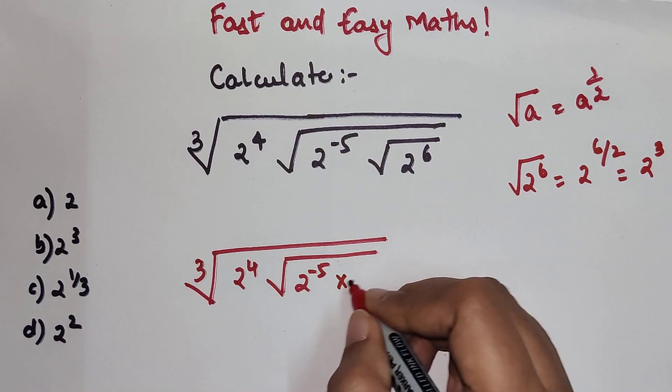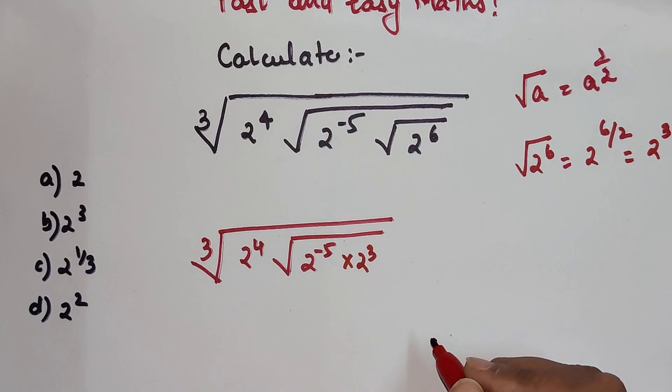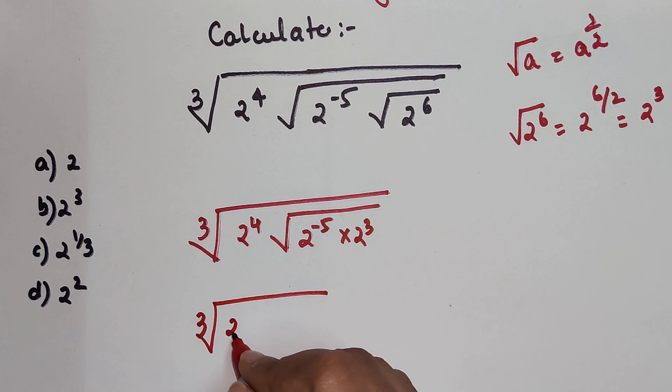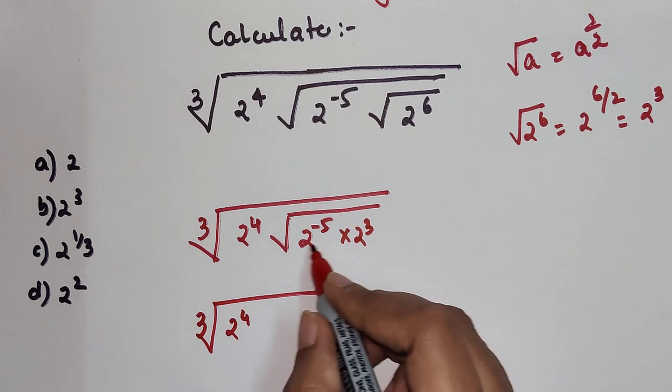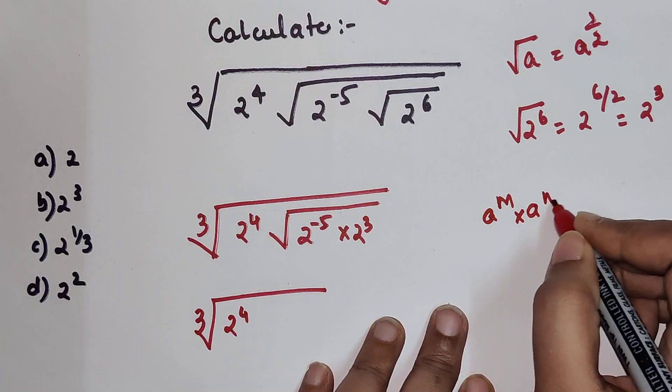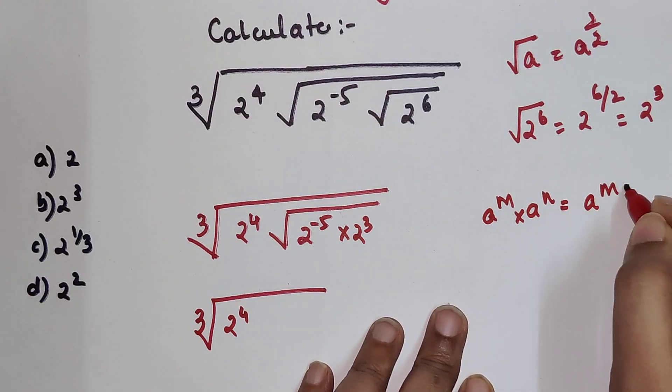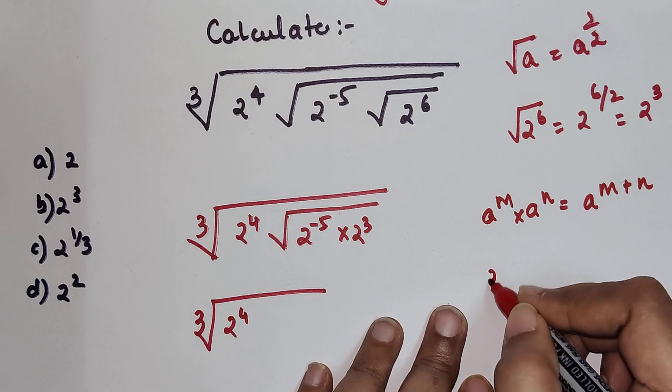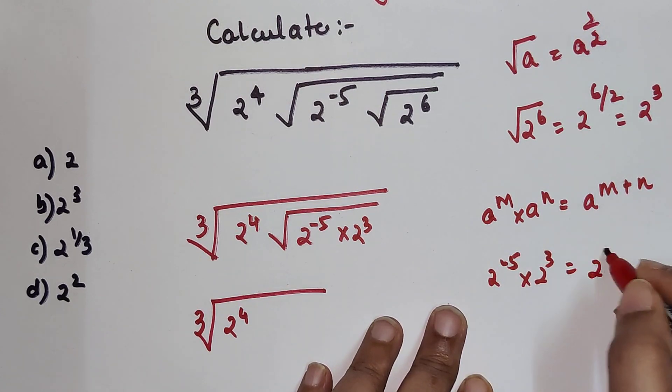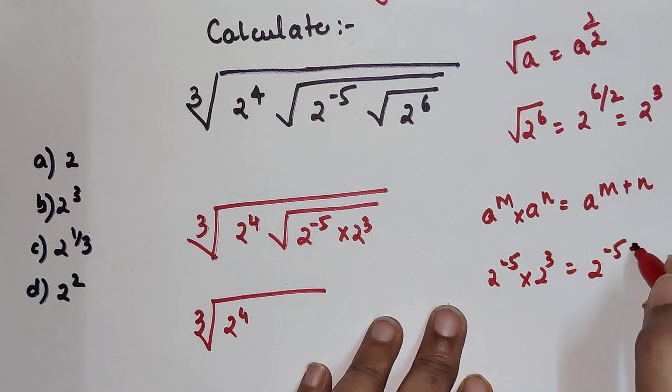So this will be now 2 raise to 3. So now again we will keep the outside cube root as it is, and then here we have a raise to m into a raise to n is nothing but always a raise to m plus n. So 2 raise to minus 5 into 2 raise to 3 is nothing but 2 raise to minus 5 plus 3.